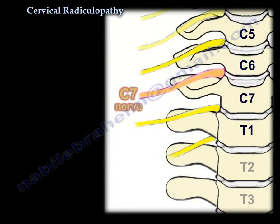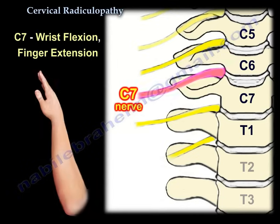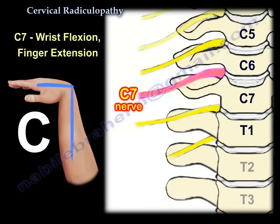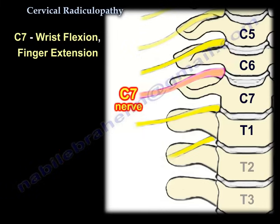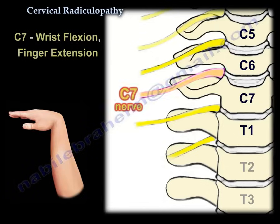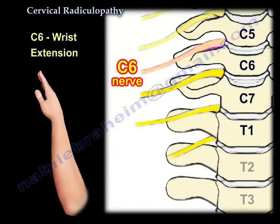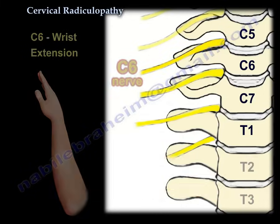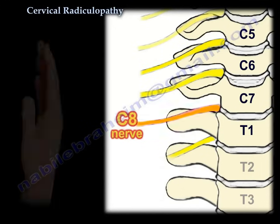Starting with C7: C7 controls wrist flexion. You can visualize that the wrist is flexed and the finger is extended — it looks like the shape of the number 7, which helps you remember. If wrist flexion is C7, then wrist extension is C6. C5-C6 is the most commonly affected disc level, compressing the C6 nerve root. Finger flexion is C8.